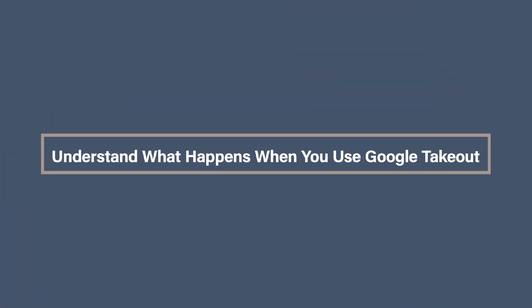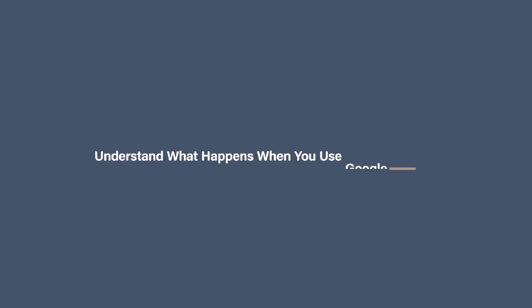Understanding what happens when you use Google Takeout. When you download your photo collection using Google Takeout, it doesn't just give you the photo files — it also includes a separate JSON file for each image. That little file contains the original metadata from when the photo was first uploaded or taken, including things like the date taken, location, camera details and lots of other information.